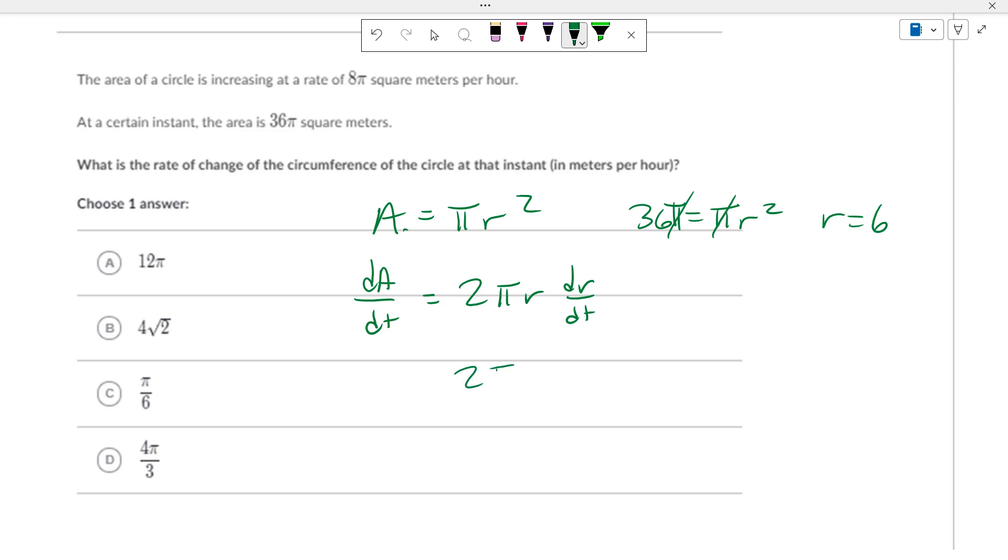So, we stick in 6 for the r. And the area of a circle is increasing at 8 pi. So, the pi's cancel. This is 12. So, 8 twelfths equals dr/dt, which is 2 thirds.